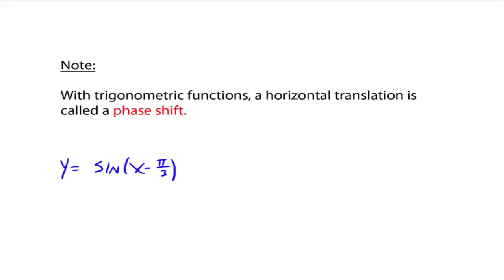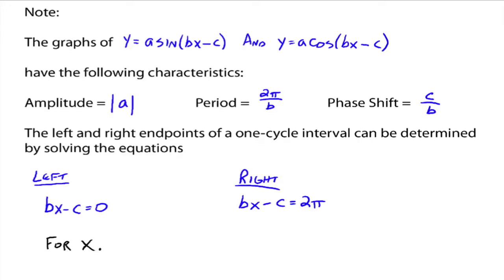But now let's generalize up our function even more. So the graphs of y equals a times the sine of bx minus c and y equals a times the cosine of bx minus c. So make note of the a, b, and the c in both of them here. They have the following characteristics. The amplitude is the absolute value of a and the period is 2 pi divided by b. We've already discussed those.